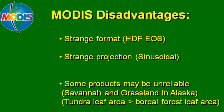There are some disadvantages with MODIS. One is that the native format is HDF EOS — Hierarchical Data Format — which is typically used in the supercomputer world. It's also in a sinusoidal projection since it's a global product, so we typically have to reproject the sinusoidal raster into a projection like the Alaska Albers projection.